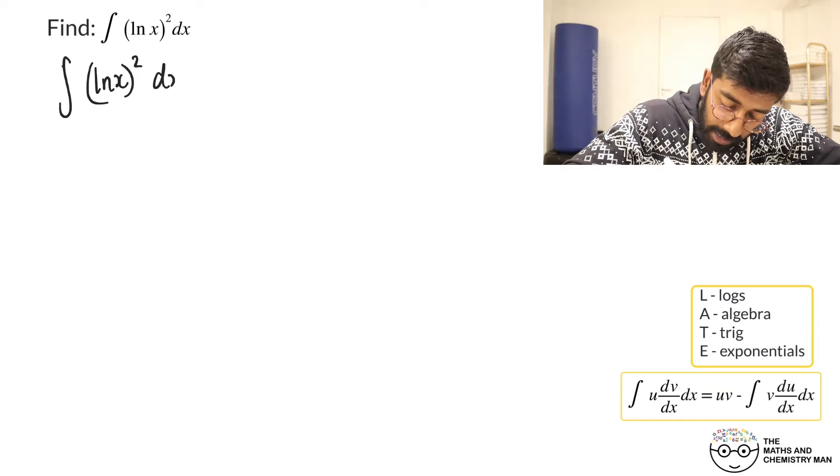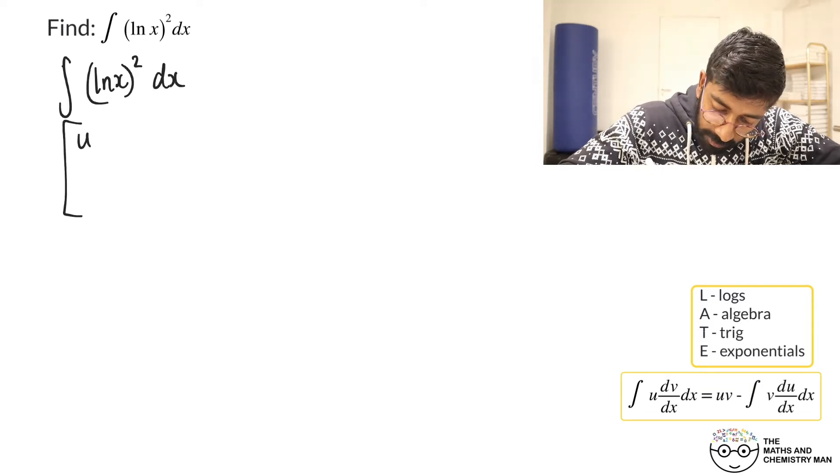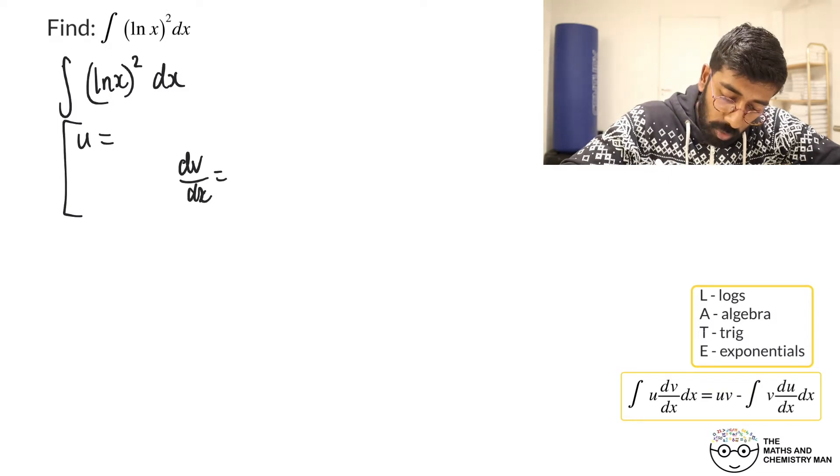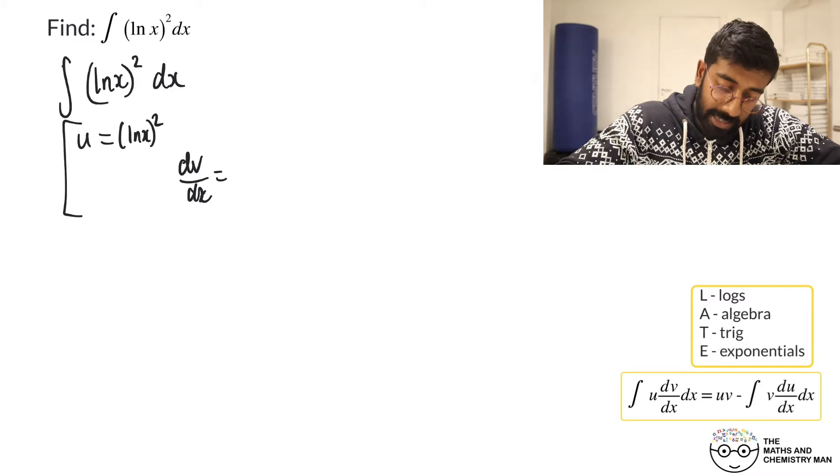Laying out is very important when you're doing by parts. So we'll have u and dv/dx. u I'm going to set as ln(x) all squared and dv/dx I'll set as just 1.